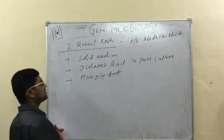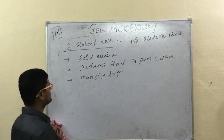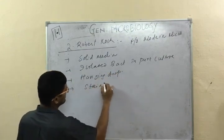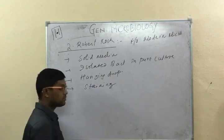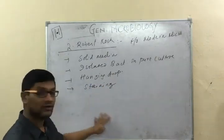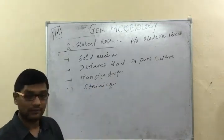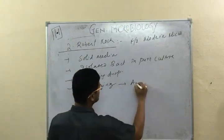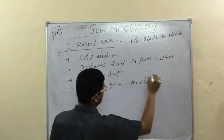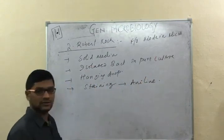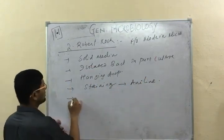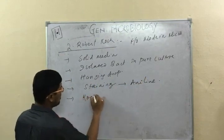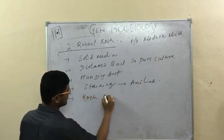Robert Koch developed the concept of isolating bacteria in pure culture. He also introduced the hanging drop preparation for demonstrating bacterial motility, and he introduced the staining technique, stating that by staining we can demonstrate bacteria in a much better way. His most popular discovery is the Koch postulate and Koch phenomena.